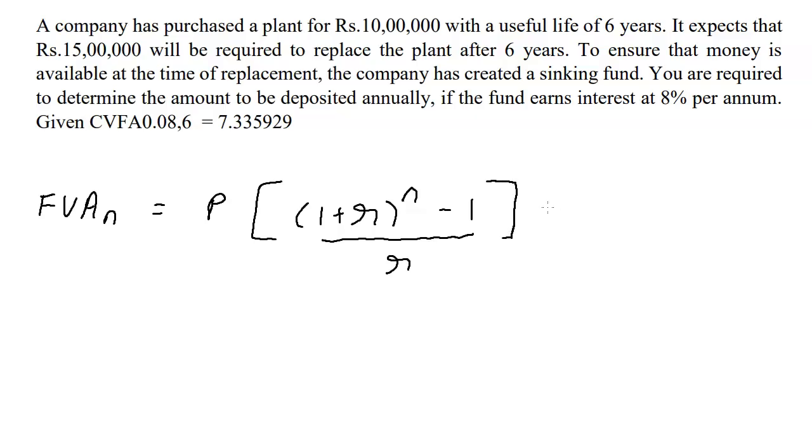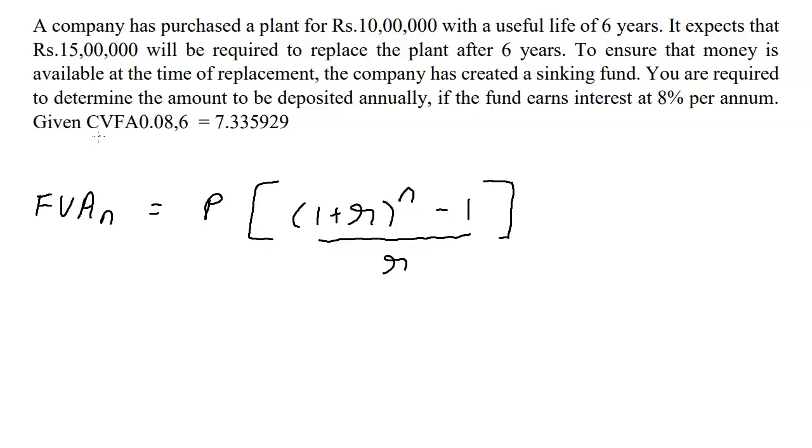This is your formula. And now, they have given us the compound value factor of annuity at 8%, that's why you have 0.08. Remember, 8% means 8 upon 100, which means 0.08. And the 6 is for 6 years. So it is the compound value factor annuity for 8% for 6 years. So what's important for us is it's 6 years. We need to have 15 lakhs in place 6 years later, and the interest rate is 8% per annum.